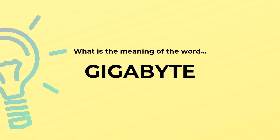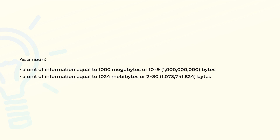What is the meaning of the word gigabyte? As a noun, a unit of information equal to 1000 megabytes or 10 to the power of 9 bytes; or a unit of information equal to 1024 megabytes or 2 to the power of 30 bytes — 1,073,741,824 bytes.